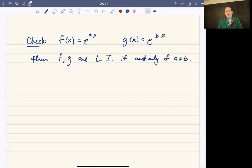So if you have two distinct exponential functions, they're linearly independent. One's not a multiple of the other. Of course, if a equals b, then they are linearly dependent because they're the same function.